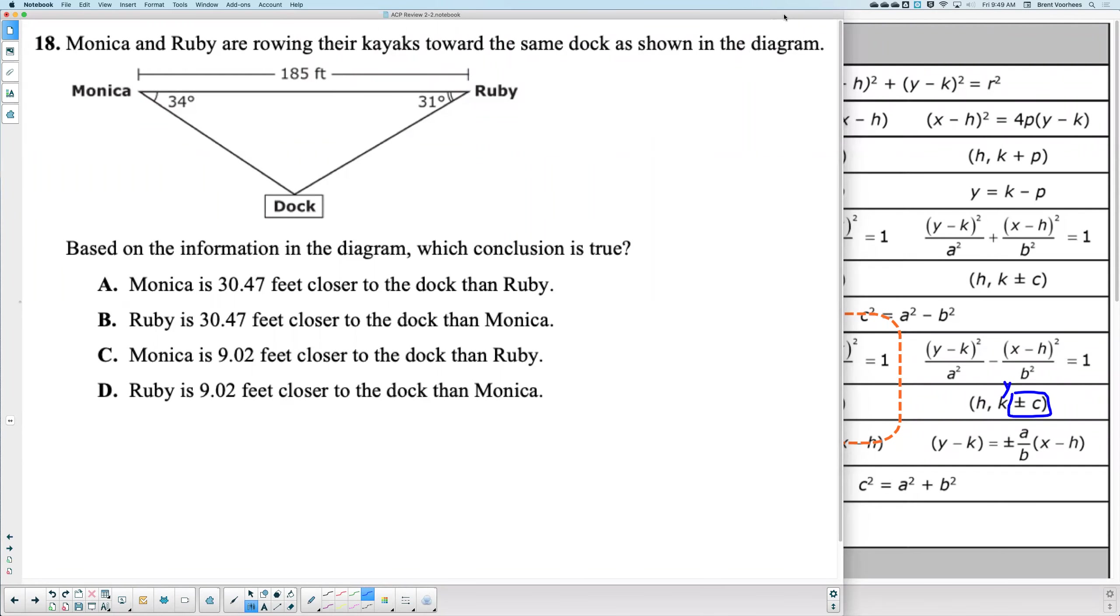Number 18, Monica and Ruby are rowing their kayaks towards the same dock as shown in the diagram. Based on the information in the diagram, which conclusion is true?